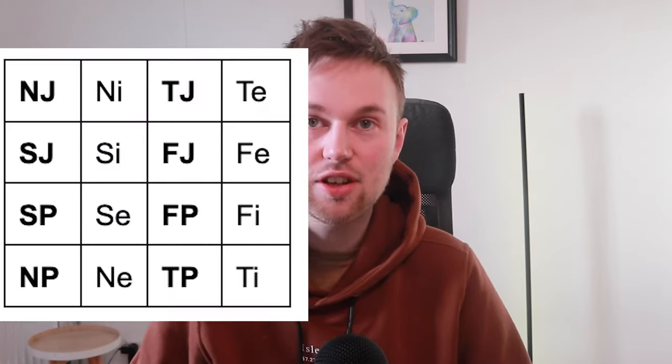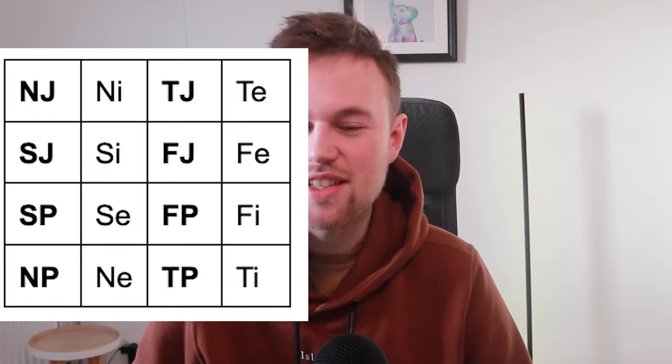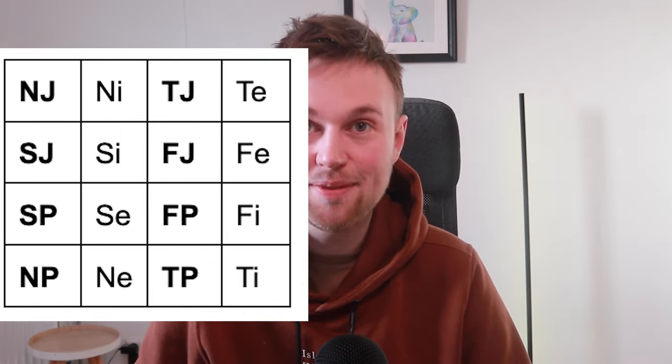What is the dominant or auxiliary function of each letter combination? NJs have NI, SJs have SI, SPs have SE, NPs have NE, TJs have TE, FJs have FE, FPs have FI, and TPs have TI. It's pretty simple — if you know their four-letter combination, you can immediately say, okay, he's an NJ, so he must have NI.